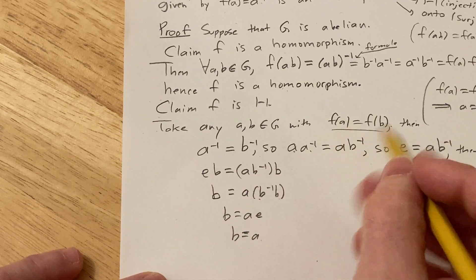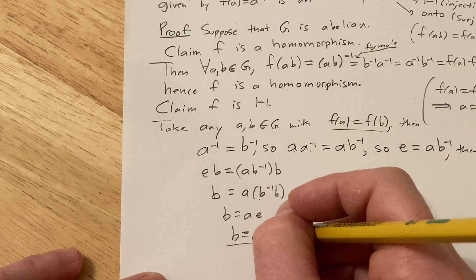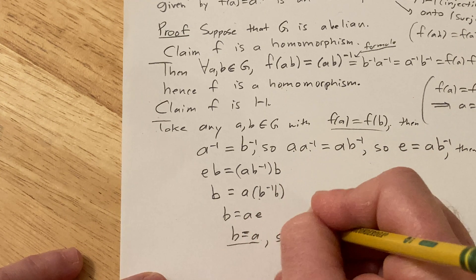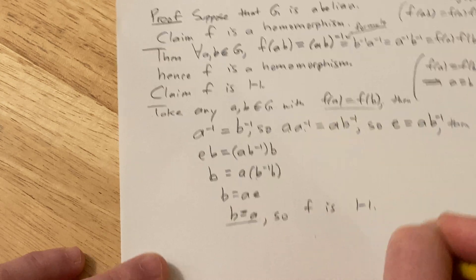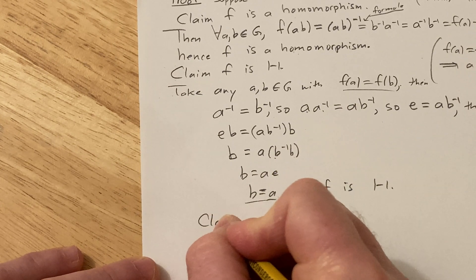So we started with f(a) equal to f(b), we have b equals a or a equals b, same thing. So f is one to one. Let's show f is onto.